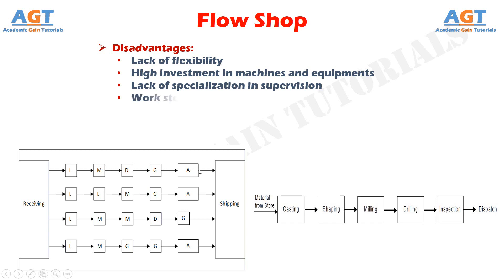Work stoppage because of breakdown: if one machine in the flow line fails, then other machines in that flow line stop functioning and thus the manufacturing process will be stopped.